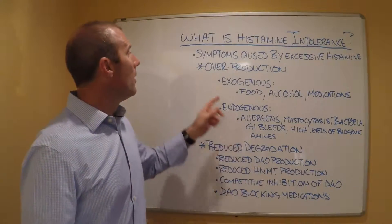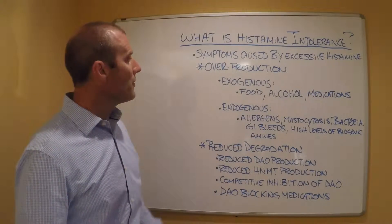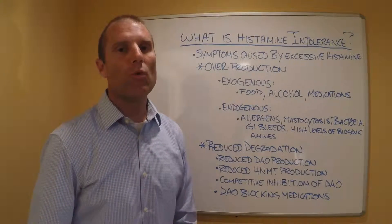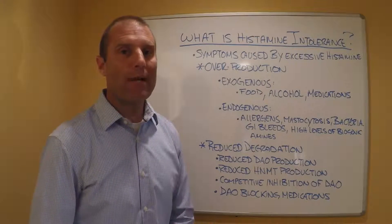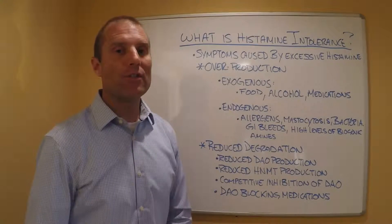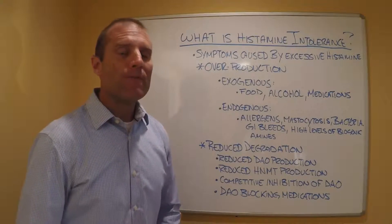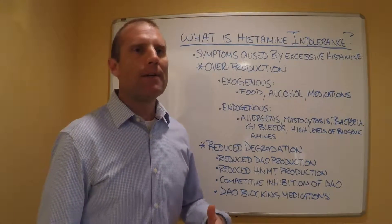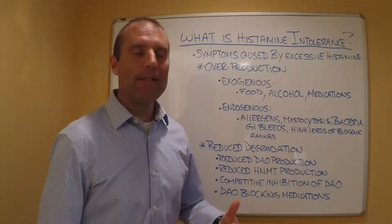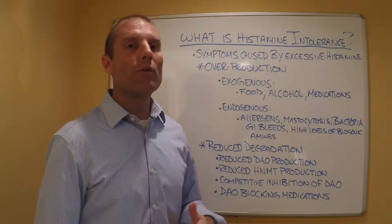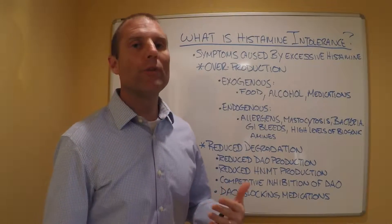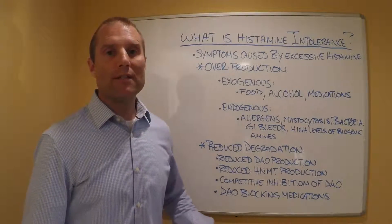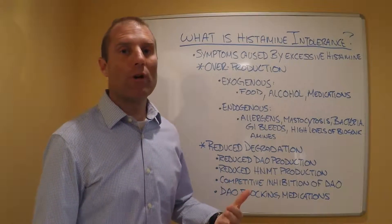We get histamine from two sources: exogenous sources from outside the body, and endogenous sources from inside the body. The exogenous sources could be foods — any foods that have higher levels of histidine, histamine, or that produce or cause the release of histamine by the body would be things that may provoke a response.